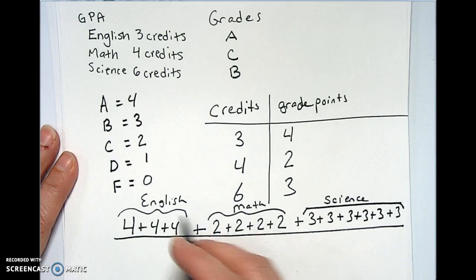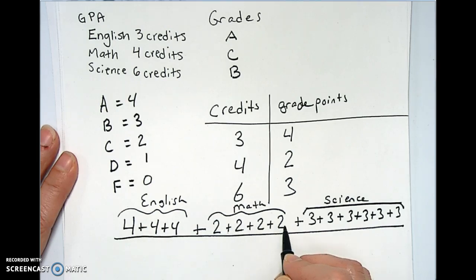So all together we got thirteen total credits, which we could have done much faster by going six plus four is ten plus three is thirteen, but whatever. Here it is thirteen credits.